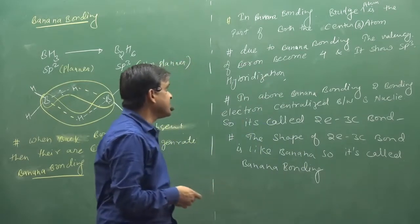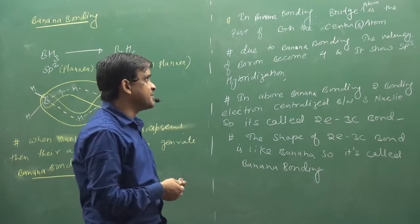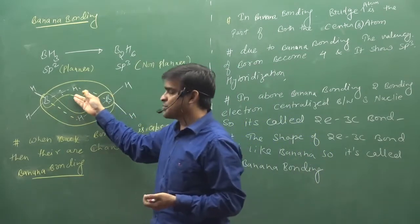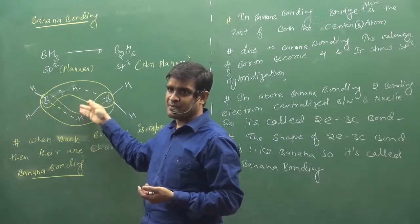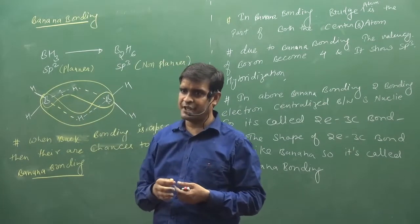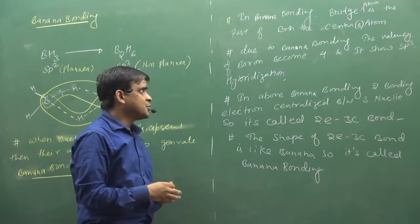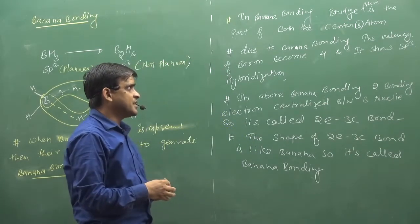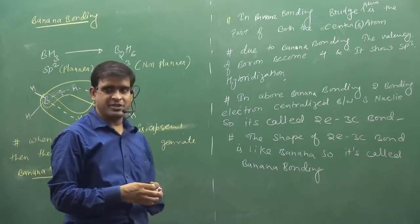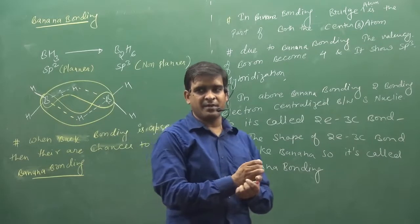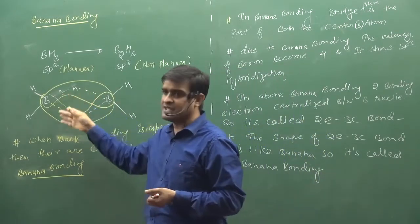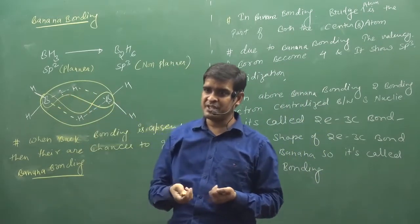Another point is: in banana bonding, the bridge atom is part of both center atoms. The bridge hydrogen atom is simultaneously shared with both boron atoms. Due to banana bonding, the valency of boron becomes 4 and it shows SP3 hybridization. Right here, the valency of boron is not 3 - it's 4. So SP3 hybridization will come.